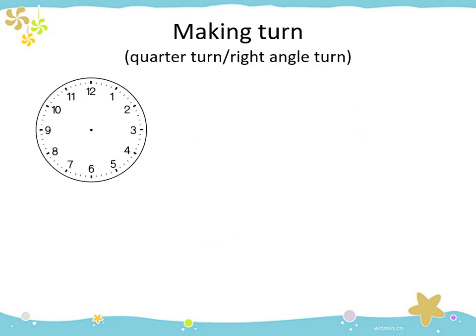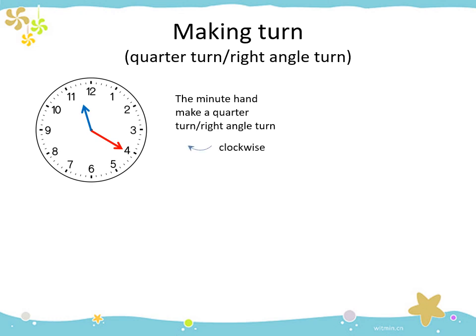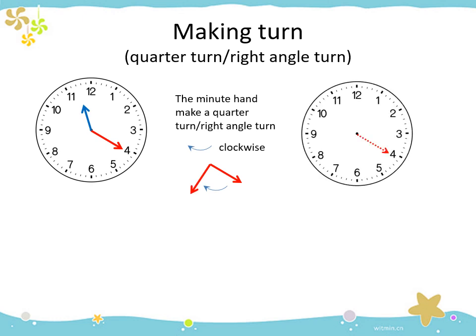Next example: the clock shows 20 minutes past 11. The minute hand makes a quarter turn or right angle in the clockwise direction. This is the position of the minute hand at first, and then it makes a quarter turn, so the minute hand will take this new position. The minute hand first points to 4 — where do you think the minute hand will be after making a quarter turn? From 4 to 7. Now the clock shows 35 minutes past 11.